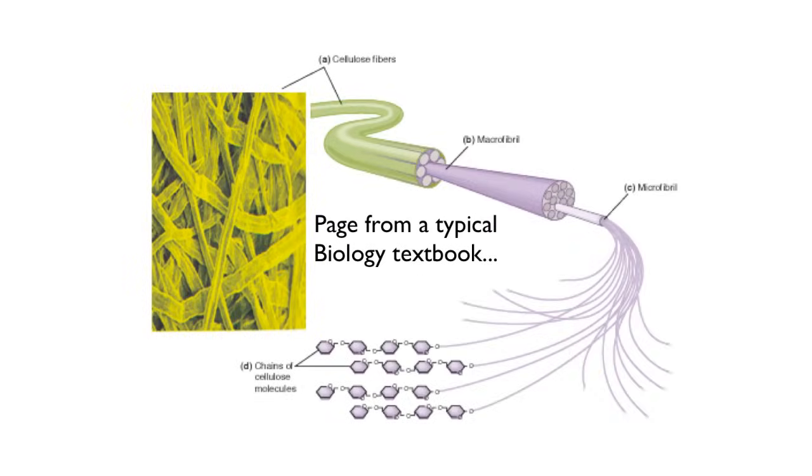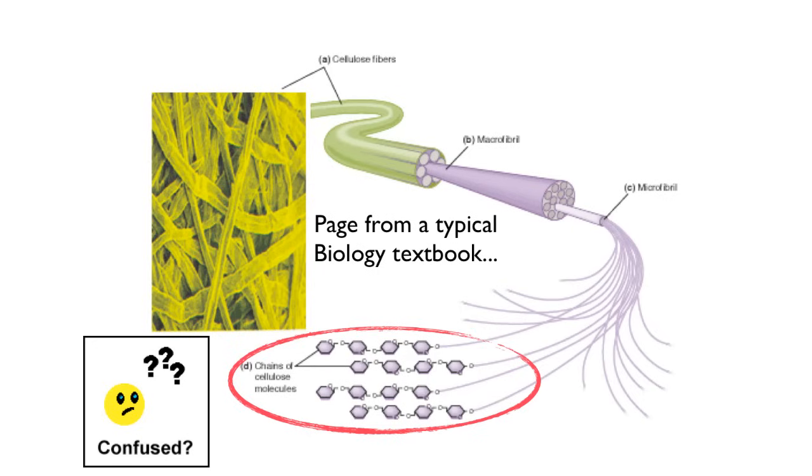If you're a biology student, chances are you have a textbook with pages that look like this, where they give you these images that they think are helpful to you, but most biology books don't actually explain what these little hexagons mean. So it leaves students very confused and wondering what the heck is that supposed to be, and how is that supposed to help me?